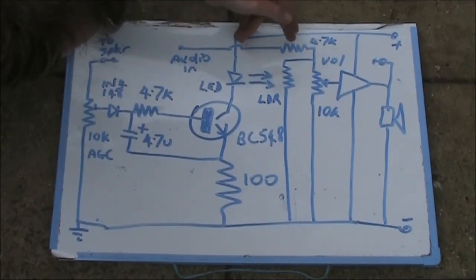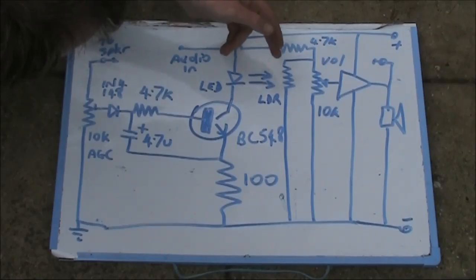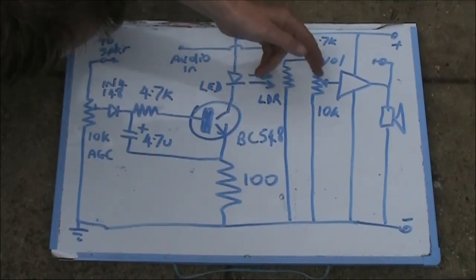I've added a 4.7K resistor here. The purpose of that is to form a voltage divider in conjunction with the light dependent resistor and the volume control.